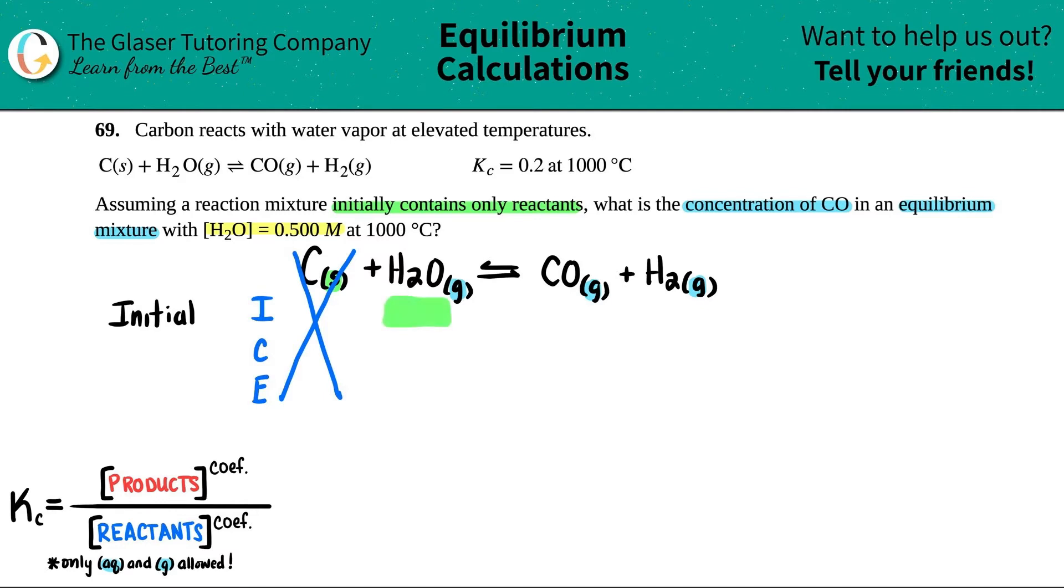We don't really know that number. They didn't tell us what we started with, but I definitely know that I had H2O at the beginning. Coming over to what we had in the beginning of the products, they stated that we only had reactants. So we didn't start with any of them. I started with nothing for CO, zero, and nothing for H2, zero.